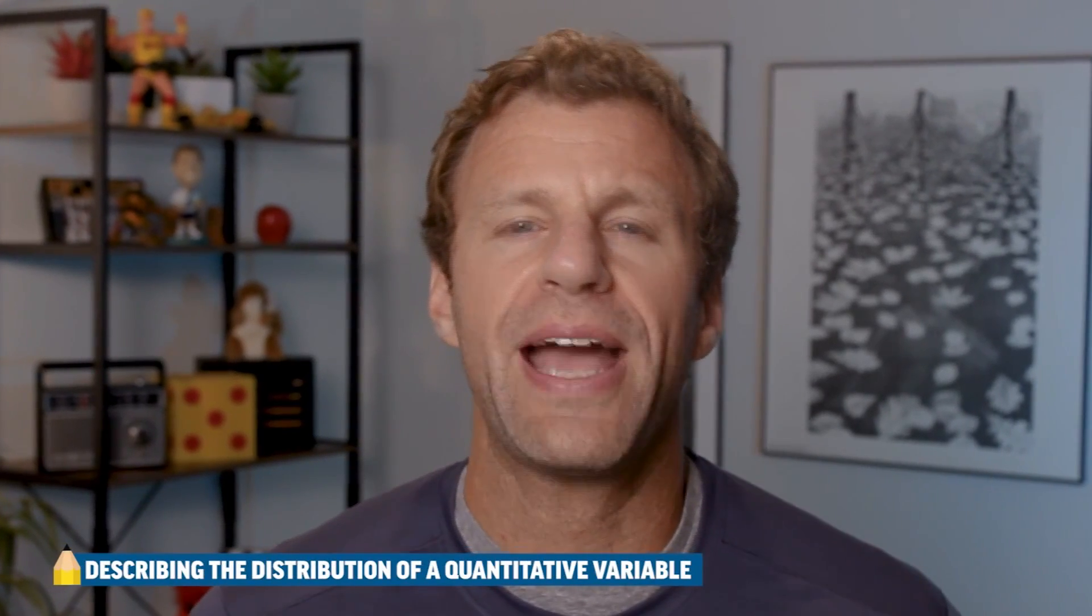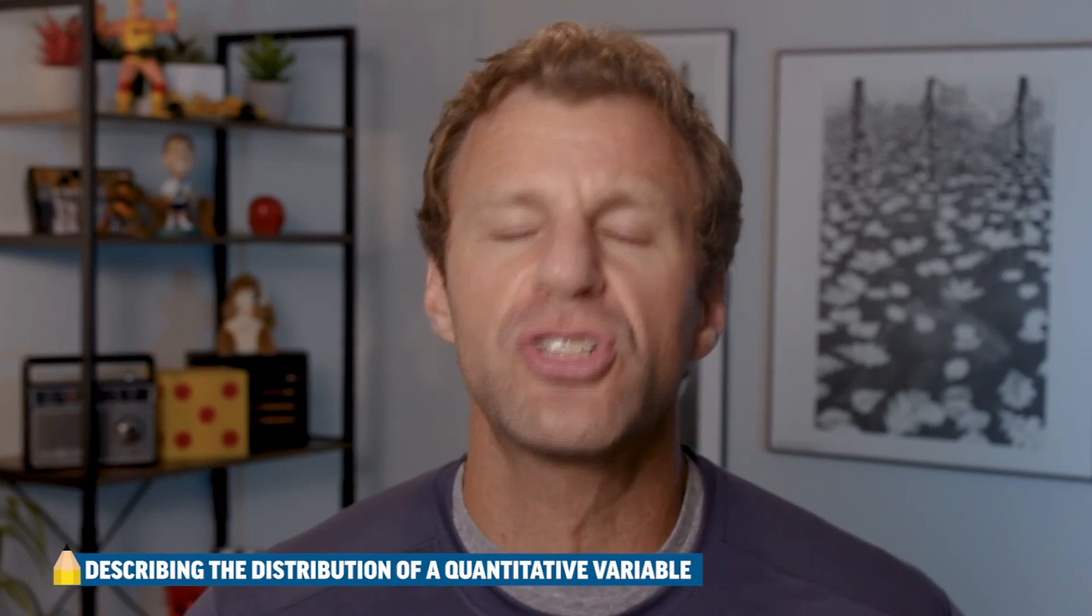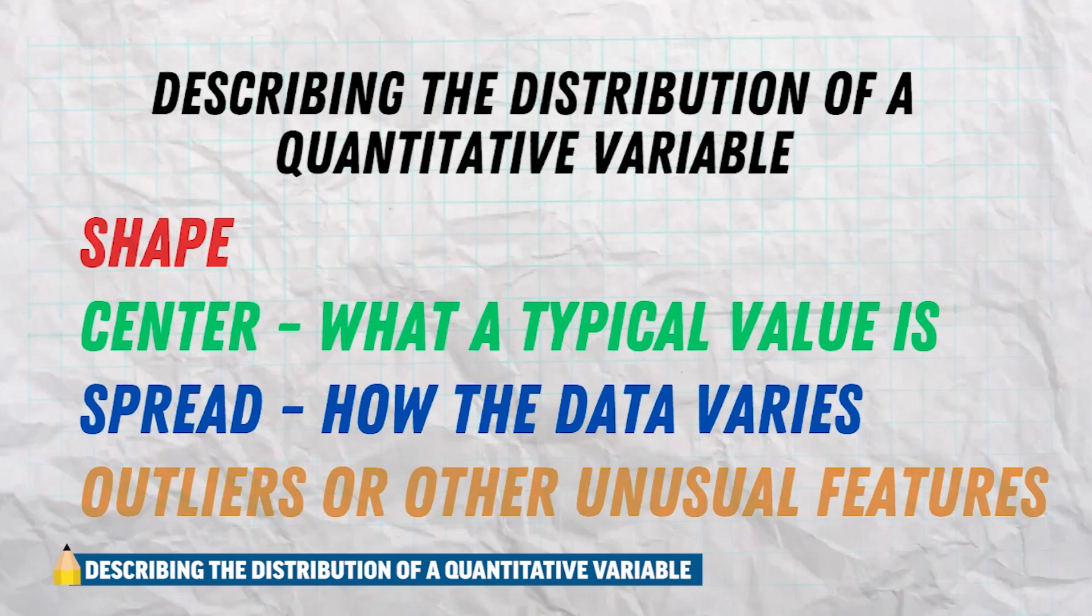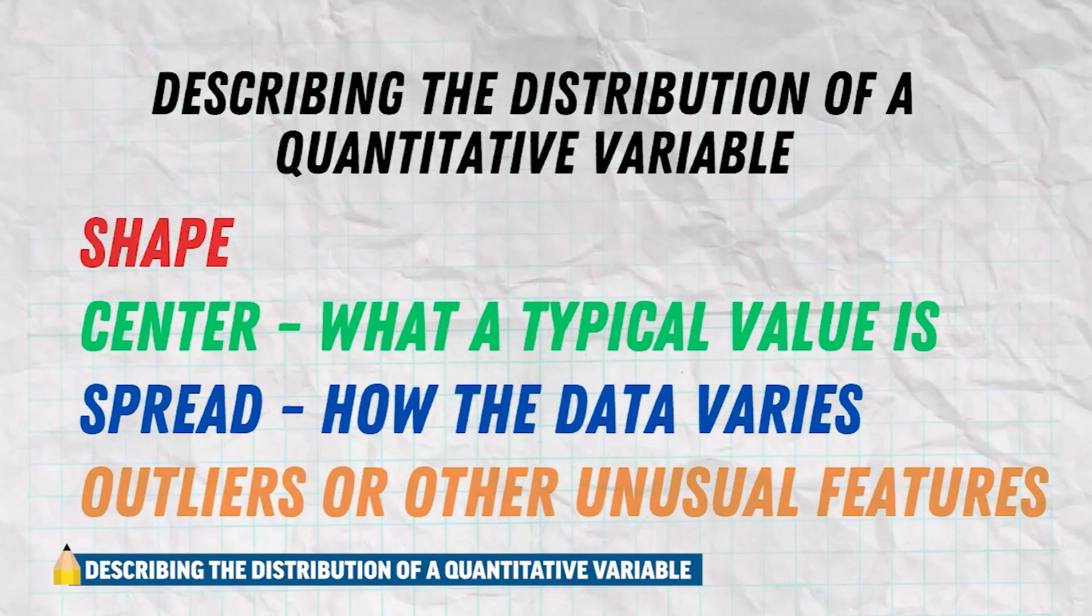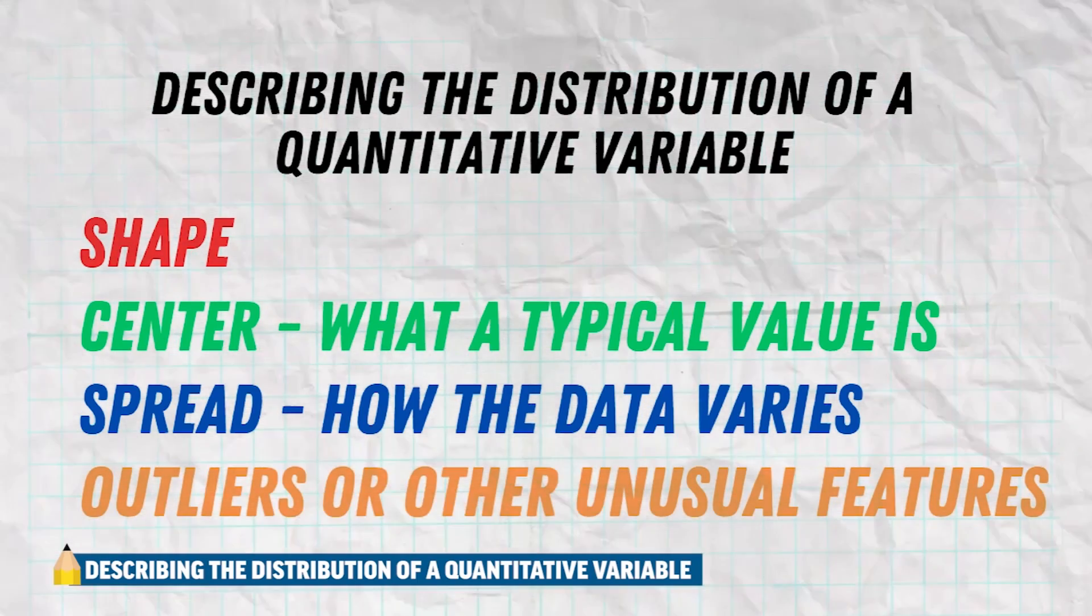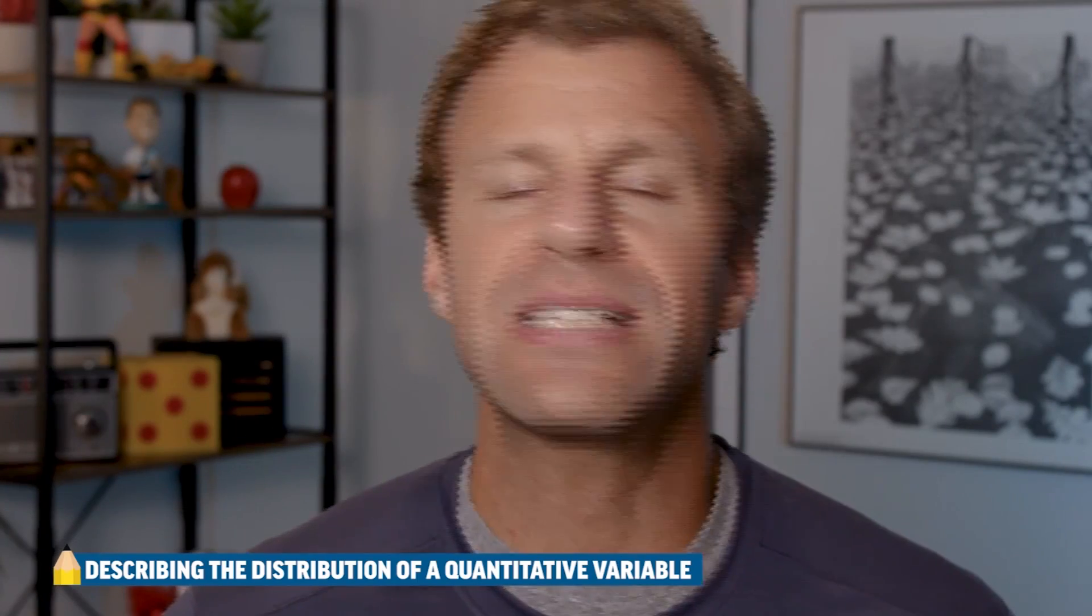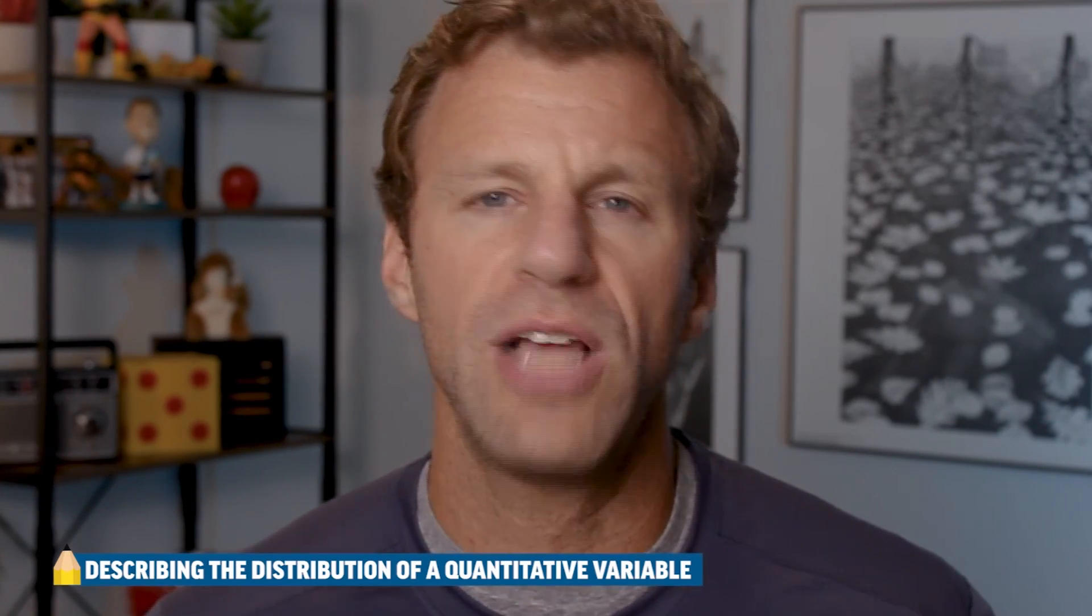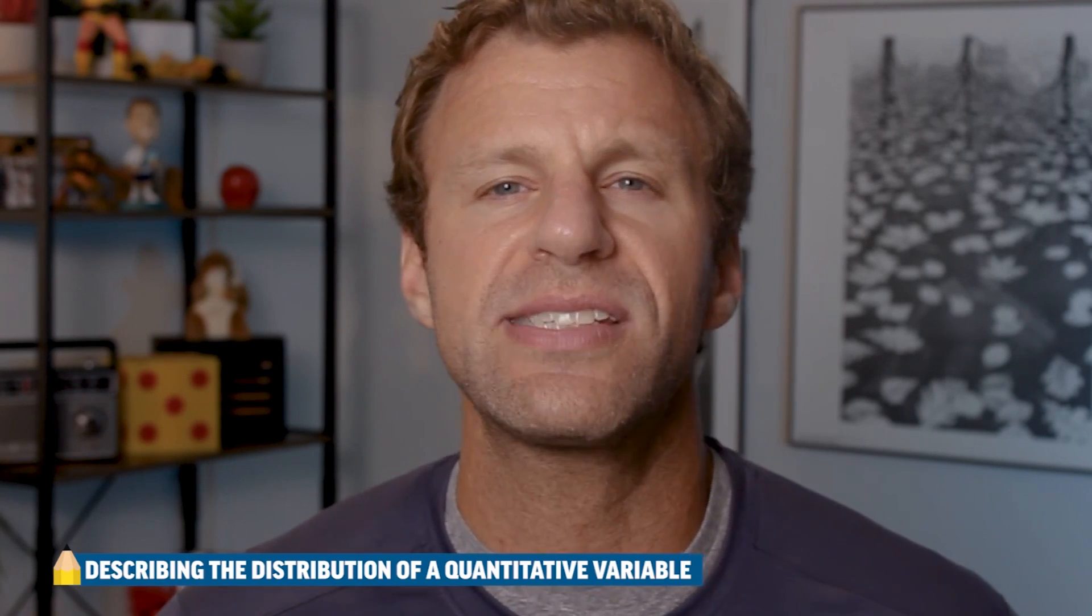In this unit, one of the most important things that you're going to be asked to do is to describe the distribution of a quantitative variable by looking at a graph. When you do this, there's four things that you have to mention: the shape, the center, the spread, and any outliers or other unusual features. Now, when we look at shape, there's lots of different things we could say: unimodal, bimodal, gap, clusters, symmetric, skewed left, skewed right.